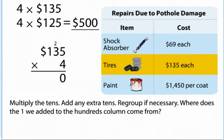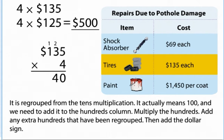Multiply the tens. Add any extra tens. Regroup if necessary. Where does the one we added to the hundreds column come from? It is regrouped from the tens multiplication.